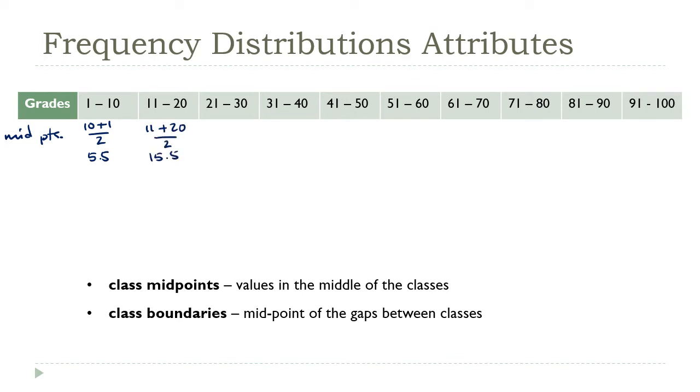Then 21 and 30. That's 25.5. And hopefully you're starting to see a pattern. Notice that these class midpoints are all 10 units apart. And if you remember from the last slide, 10 is the class width. Now that consistency, it isn't a coincidence.